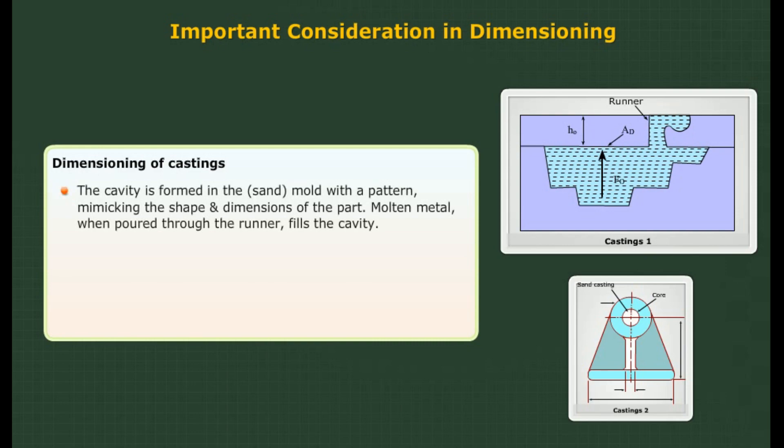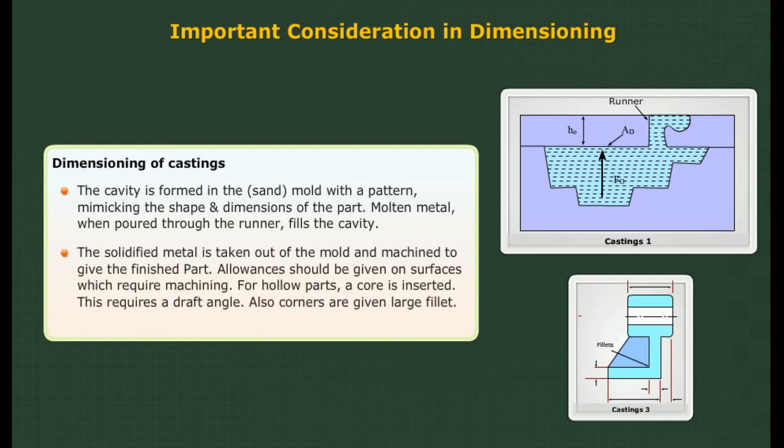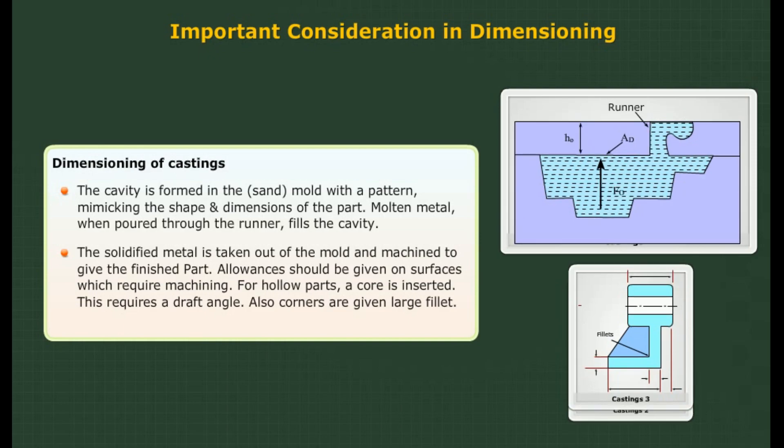Dimensioning of castings: The cavity is formed in the sand mould with a pattern mimicking the shape and dimensions of the part. Molten metal poured through the runner fills the cavity. The solidified metal is taken out of the mould and machined to give the finished part. Allowances should be given on surfaces which require machining. For hollow parts, a core is inserted, requiring a draft angle; corners are also given large fillets.